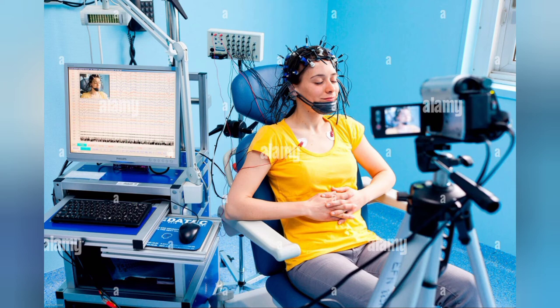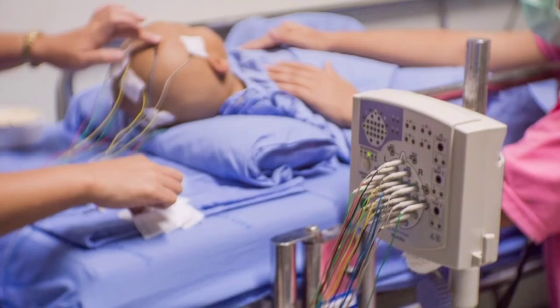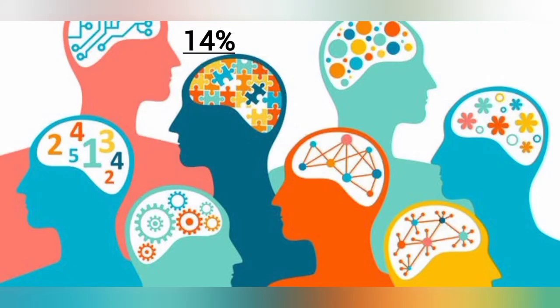EEG is used to investigate dementia, head injury, consciousness, brain tumors, encephalitis, sleep disorders like sleep apnea, brain damage, brain dysfunction, stroke, and it can also confirm brain death if someone is in a persistent coma. Today about 14 percent of the global burden of disease is attributed to neuropsychiatric disorders.